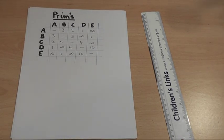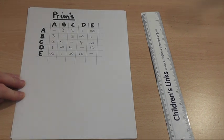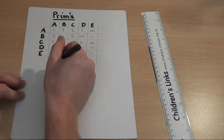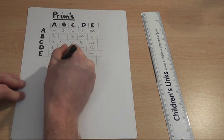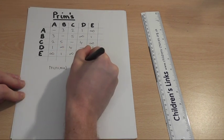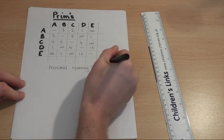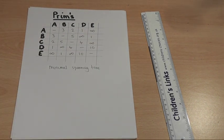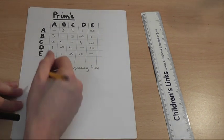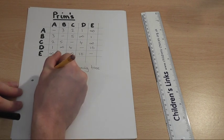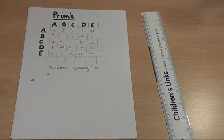Prim's algorithm finds the minimal spanning tree connecting the nodes in the network. Some simple examples of this: if you've got just two nodes, then you just require one arc to connect. If you had three nodes, then to connect the nodes together would require just two arcs.